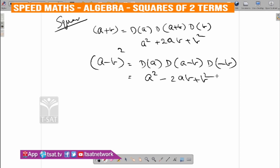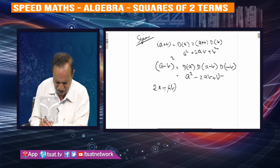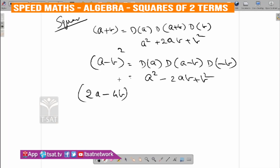So A minus B whole square is A square minus 2AB plus B square. Like this, for 2A minus 4B whole square: A square is A square, next 2AB.